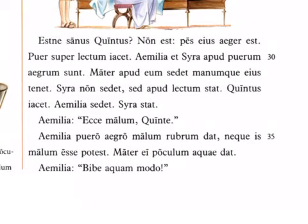Neque malum esse potest — nor is he able to eat the apple. Note that esse with a long e means 'to eat' rather than 'to be.' Esse means 'to be,' edere means 'to eat.'